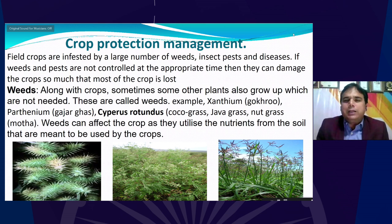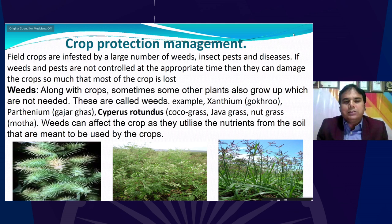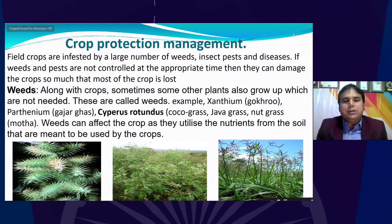First, what is a weed? Along with the crop, sometimes other plants also grow which are not needed — these unwanted plants are called weeds. One popular example visible in the slide is Xanthium, popularly known as gokru. Another is Parthenium, which is harmful to people because Parthenium or gajar grass causes severe allergy. There is also Cyperus rotundus, known as coco grass, java grass, nut grass, or motha.